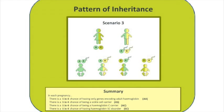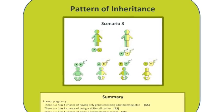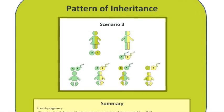Overall, looking at the mathematics, there's a 1 in 4 chance of offspring from those parents having any of these different outcomes. There's only a 1 in 4 chance of the child not inheriting any of the S or C genes, a 1 in 4 chance of being a carrier of the S gene, a 1 in 4 chance of being a carrier of the C gene, and a 1 in 4 chance of the child having haemoglobin SC disorder.